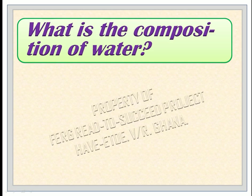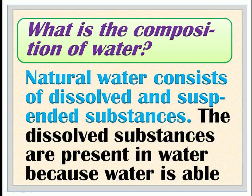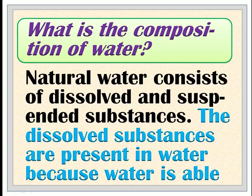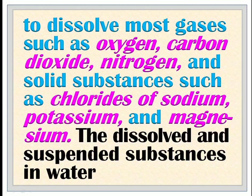What is the composition of water? Natural water consists of dissolved and suspended substances. The dissolved substances are present in water because water is able to dissolve most gases, such as oxygen, carbon dioxide, and nitrogen, and solid substances, such as chlorides of sodium, potassium, and magnesium.